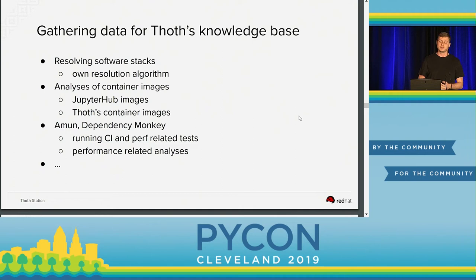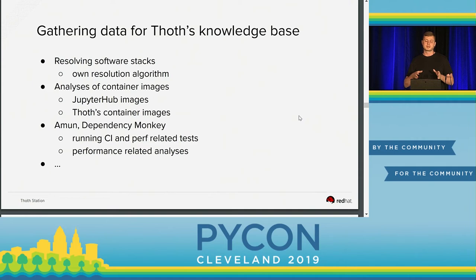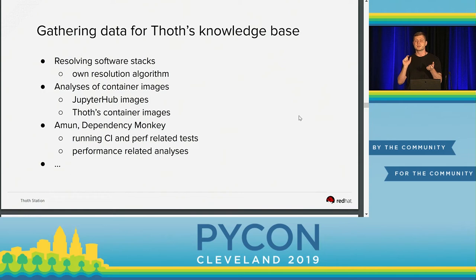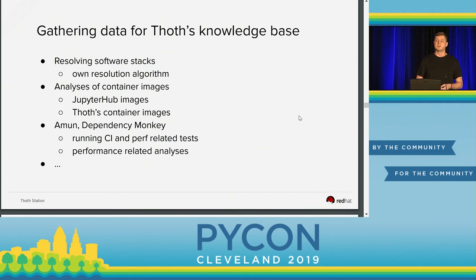We also have other sources of data for our knowledge base. We have a service called Amun, and what this service does is automatically verify that a given software runs correctly, that it builds and behaves correctly. There is also a tool called Dependency Monkey that can switch different versions of libraries and run specific software on specific hardware, and then we aggregate that data into our knowledge base. So we burn some CPU for you in order to come up with the best possible software stack.